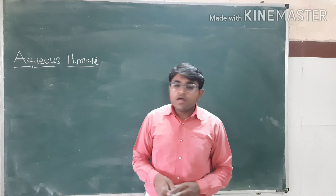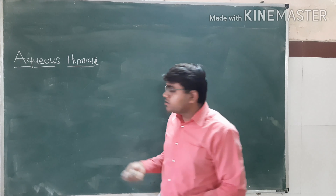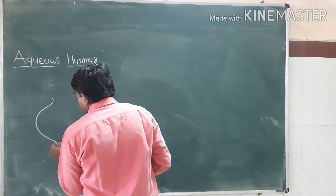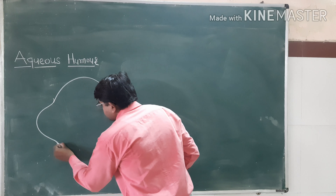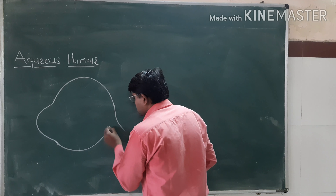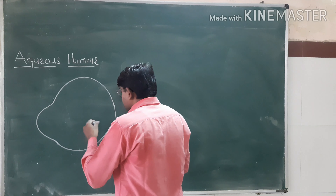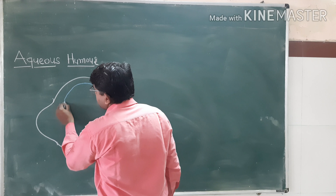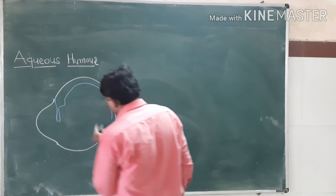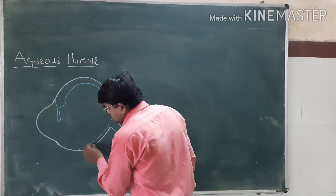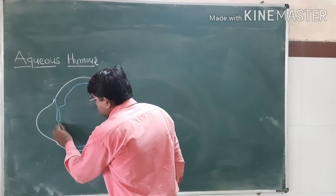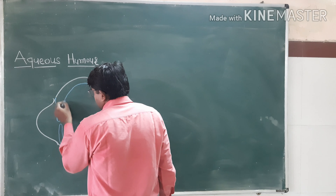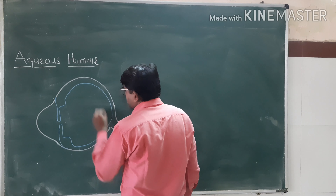I'm Dr. Deepak, and today we are going to learn about the aqueous humor. First of all, we draw the diagram of the eyeball. Here is the cornea, then the sclera, optic nerve. The middle coat is the uvea: ciliary body, iris — the ciliary body and iris.